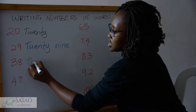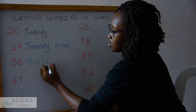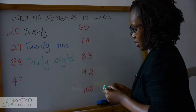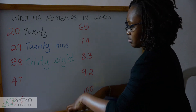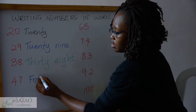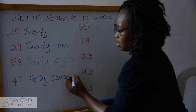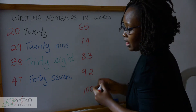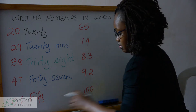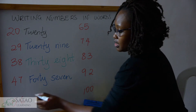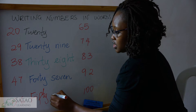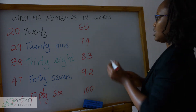The next one is thirty, then thirty-eight. The one after that is forty-seven.